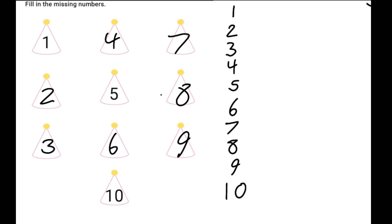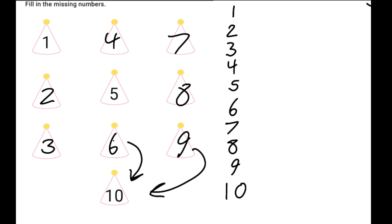But that seems wrong. Why does it feel wrong? When I go from 6, do I go to 10? Or am I supposed to go from 9 to 10?